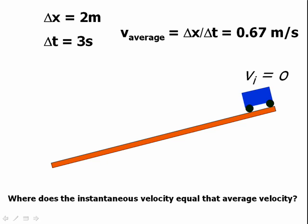In other words, if that cart had a magic speedometer on the side of the cart, where would the cart be on that ramp when the speedometer reads 0.67 meters per second? Would it be halfway down the ramp? Would it be in the top half of the ramp? Or would it be in the bottom half of the ramp?